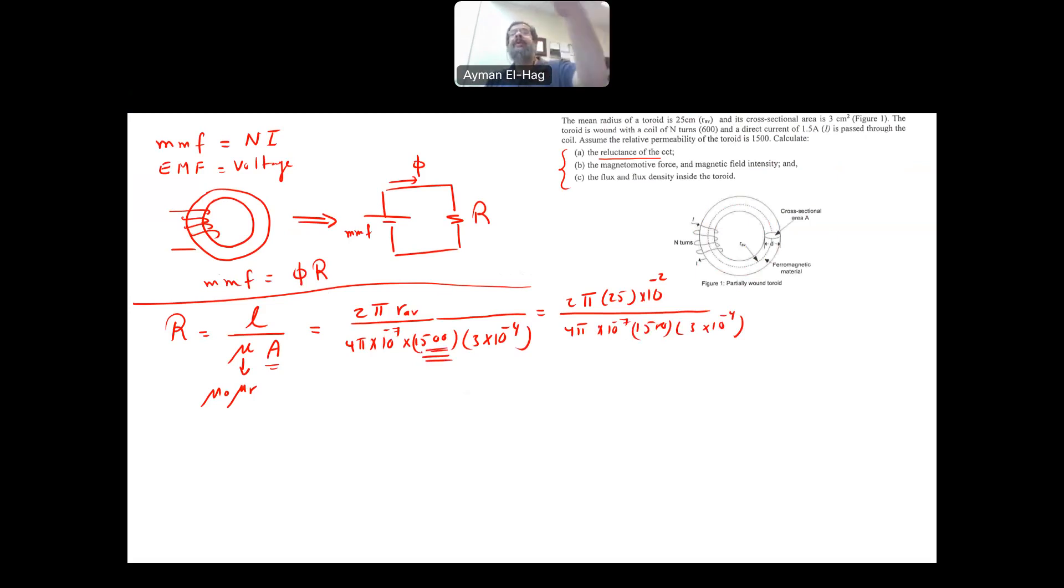The reluctance is like the resistance in the electrical circuit. So when you calculate this, this is equal to 2,777,777.8. And the unit is ampere turn per weber. So that is the first thing that is asked to find, which is the reluctance. This is part A.